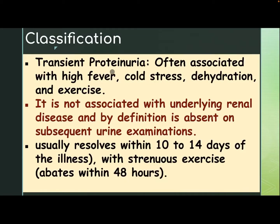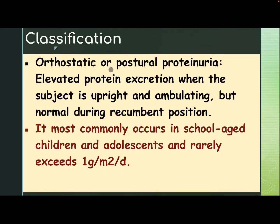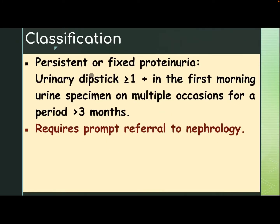Classification: Transient proteinuria is often associated with high fever, cold, stress, dehydration, and exercise. It is not associated with underlying renal disease and by definition is absent on subsequent urine examination, usually resolving within 10 to 14 days of illness, and with strenuous exercise within 48 hours. Orthostatic or postural proteinuria involves elevated protein excretion when the subject is upright and ambulating, but normal during recumbent position. It most commonly occurs in school-age children and adolescents and rarely exceeds 1 g per cubic meter per day. Persistent or fixed proteinuria shows one or more plus on the first morning urine specimen on multiple occasions over more than 3 months, and requires prompt referral to nephrology.